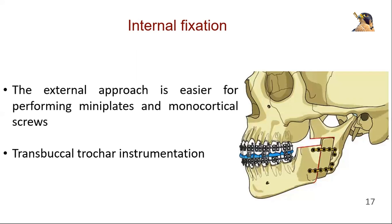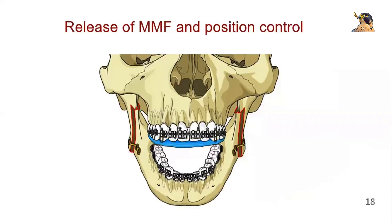Bone plate or bicortical screw osteosynthesis can also be performed using transbuccal trocar instrumentation. After completion of osteosynthesis on both sides, the MMF is released and the resulting occlusion is checked against the pre-planned position. The splint may be fixed to the maxillary teeth with a few thin wires and left in place during the healing phase to allow for neuromuscular adaptation and position control.